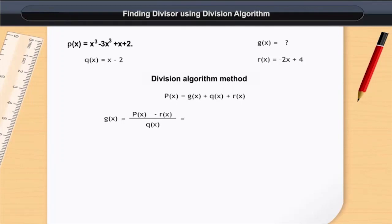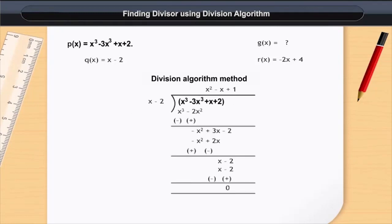So we rewrite the equation as g(x) is equal to [p(x) - r(x)] divided by q(x), which equals (x³ - 3x² + x + 2 - (-2x + 4)) divided by (x - 2).